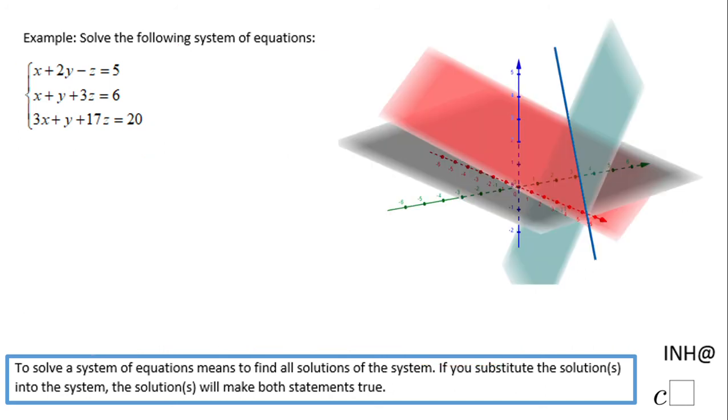A good way to see it is looking at the graph. On this slide here, you can see three planes—each plane represents one of these equations—and they all intersect in this line, which is the solution of the system of equations.